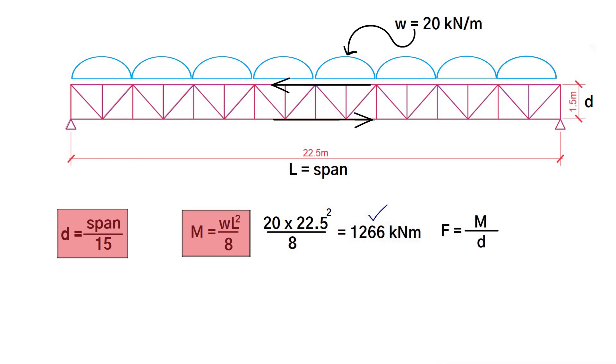This equals 1,266 kilonewton meters divided by 1.5, which gives us 844 kilonewtons of axial force in the top and bottom chord.